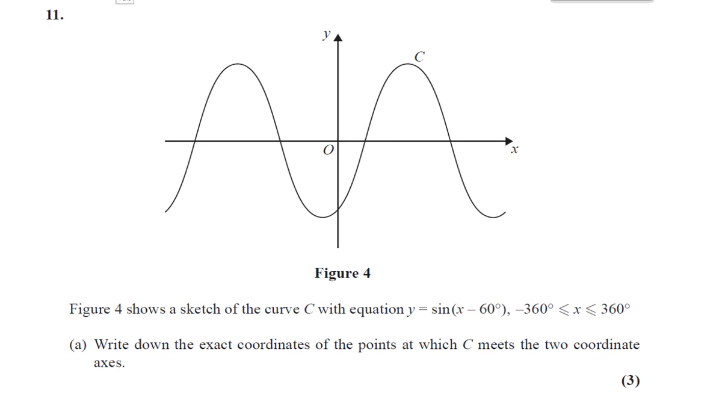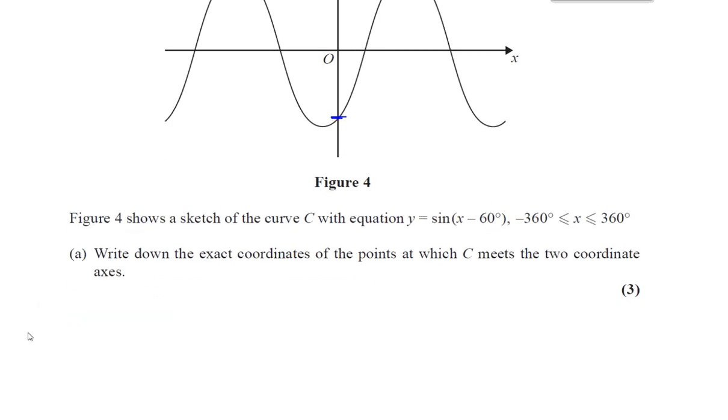Okay, so let's start off with the y-axis. Let's start off with this point here. Now we know that on the y-axis, we know that x equals 0, right? So we've got y equals sine x minus 60. We have to put x equals 0, so y is going to be the sine of negative 60 degrees.